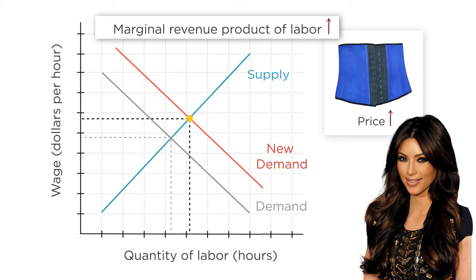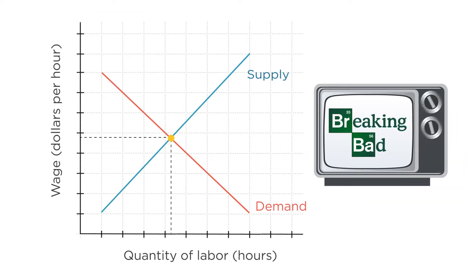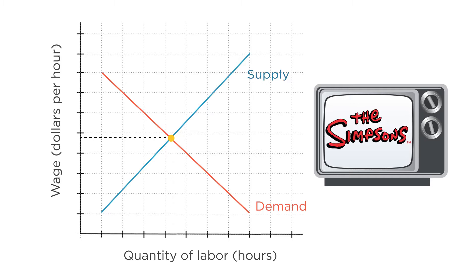Suppose alternatively that there is a sudden boom in quality TV shows. Many people decide they're happy to give up some consumption in order to have more leisure time to watch all this quality TV. This time, labor demand doesn't change, because the improved television landscape does nothing to alter the marginal revenue product of labor for firms. Workers are still just as productive if they decide to work for a firm.